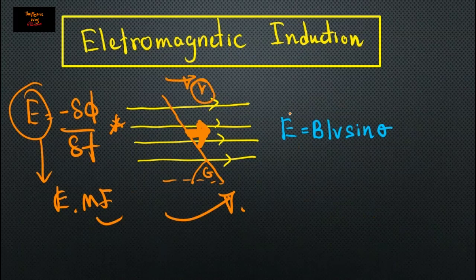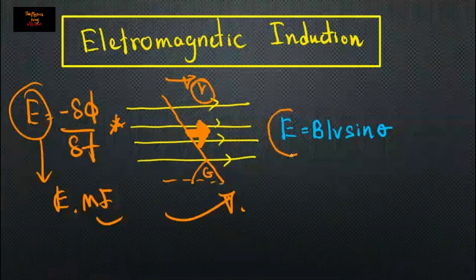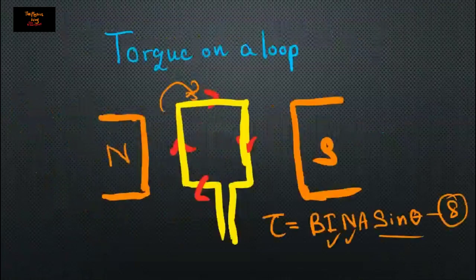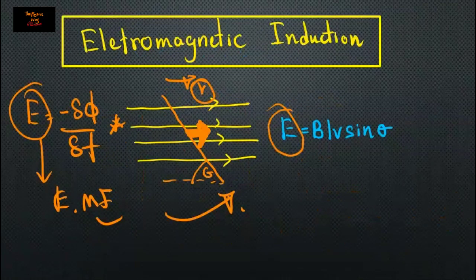For a rod moving with a velocity v inside a magnetic field, the induced EMF is e equals B l v sine-theta. This is the ninth equation.